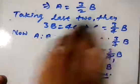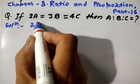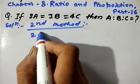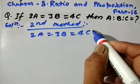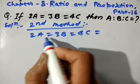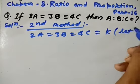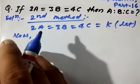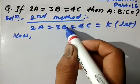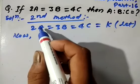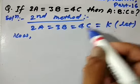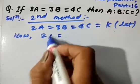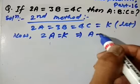Now let's see the second method. In the second method, 2a = 3b = 4c is given. We let this relation be equal to k. We have to find these quantities in terms of k. From 2a = k, we get a = k/2.